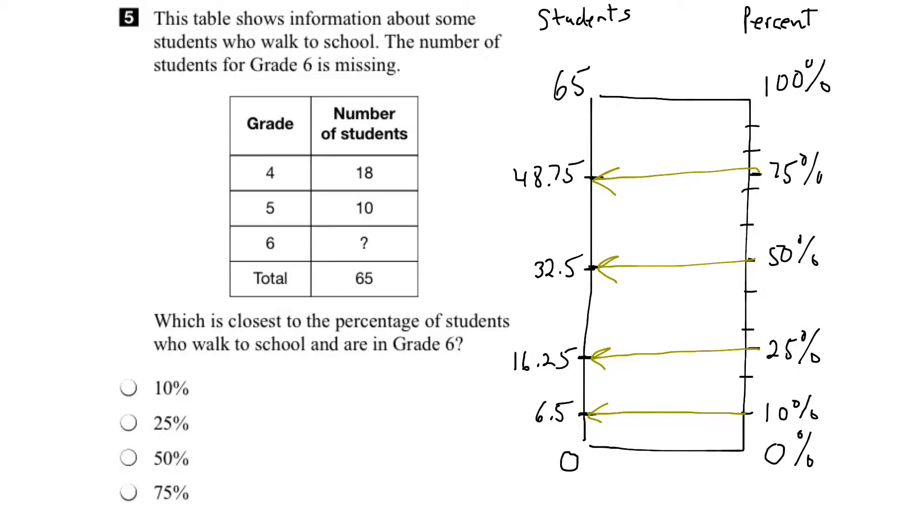Now, our job is to figure out how many grade 6 students there are, where they fit on this line so we can determine or estimate the percentage. Well, when we look at the data, we can see that we don't have the value for grade 6 students who walk to school, but we can figure it out.